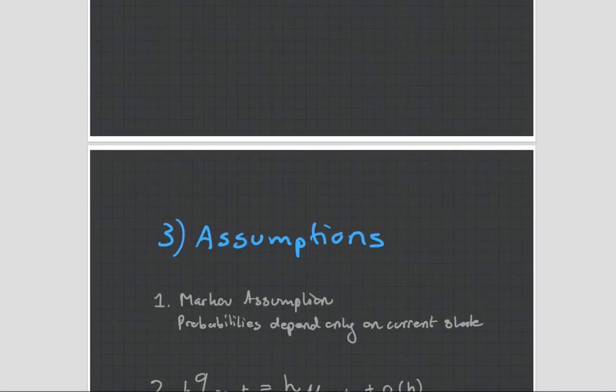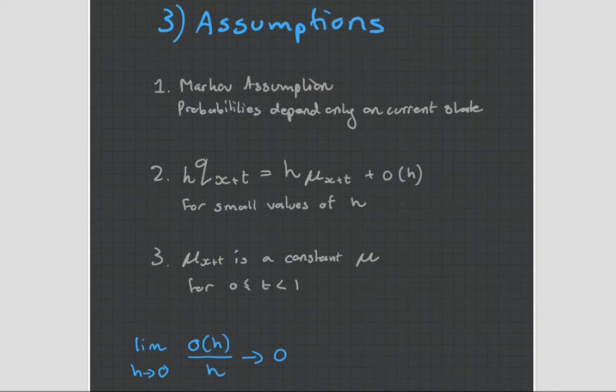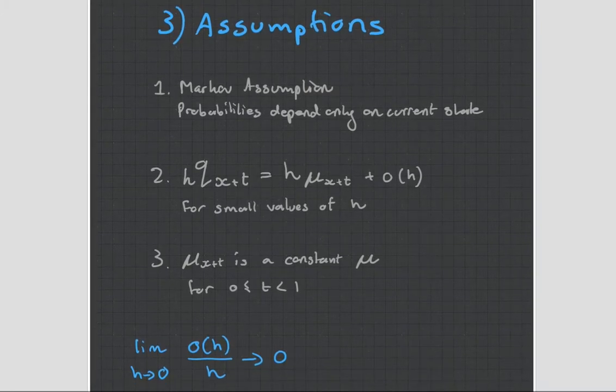Now, before we can move any further, we need to make some assumptions with regards to this whole mathematical theory. With Markov models, we make the assumption that they have the Markov property. And that is that the probabilities depend only on the current state. So it doesn't matter what your history is—all information is contained in the present state. And so the past does not influence the present that pushes to the future.